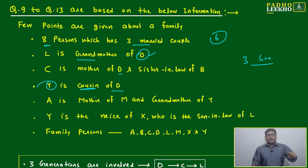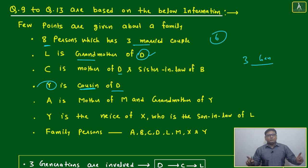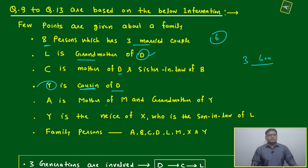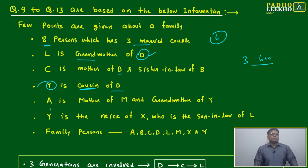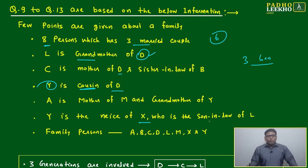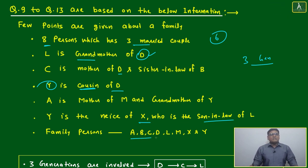D and Y are not own brother and sister; they will be brother and sister from different people coming from the same grandparents. A is the mother of M and the grandmother of Y. Y is the niece of X, who is the son-in-law of L. The eight family persons are: A, B, C, D, L, M, X, and Y.